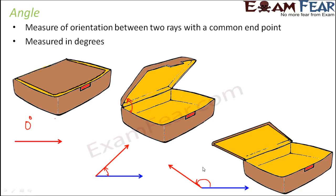So basically as you open the lunchbox, the orientation between the two surfaces keep changing. Now this orientation, we are actually measuring it between two rays with a common end point. So this measure of orientation between two rays with a common end point is called angle.